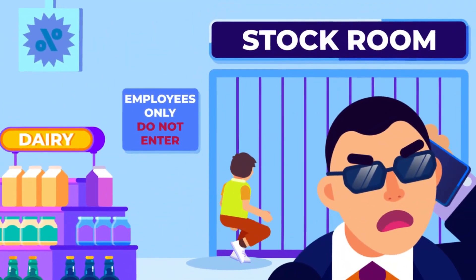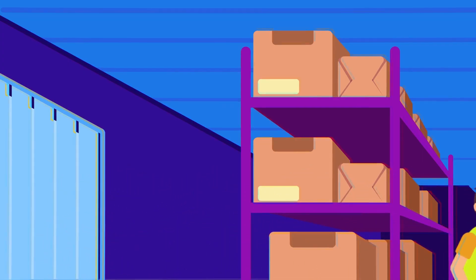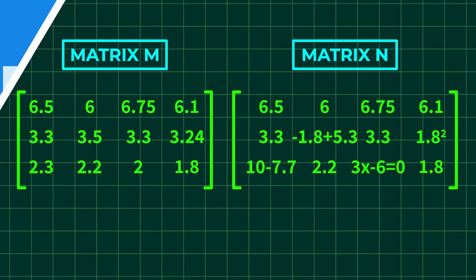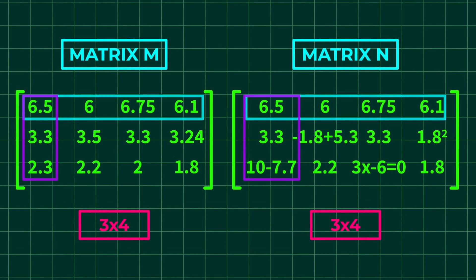A matrix can be equal with another matrix as long as they have the same order and the corresponding elements are equal. Look at the following matrix N. Is it equal to matrix M? First, check their orders. Both are 3 by 4 matrices, so the first requirement is fulfilled.